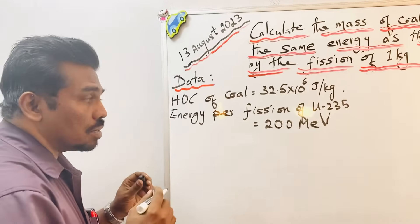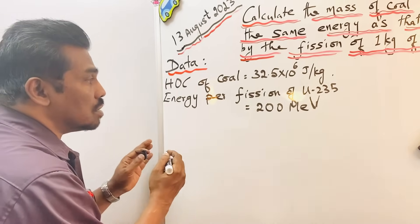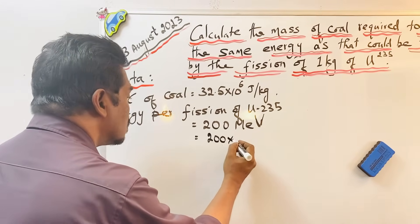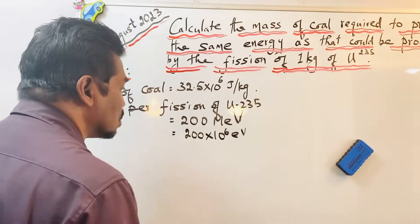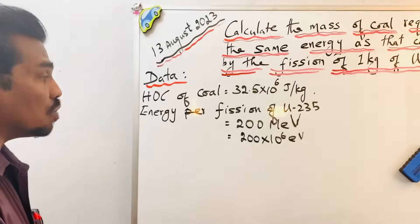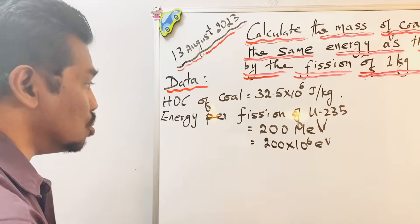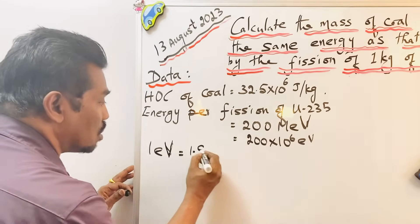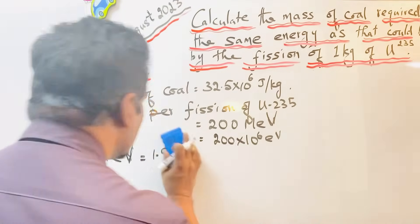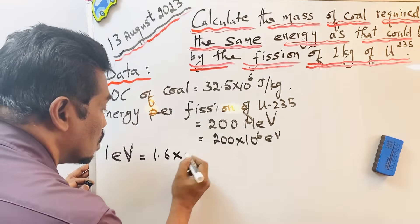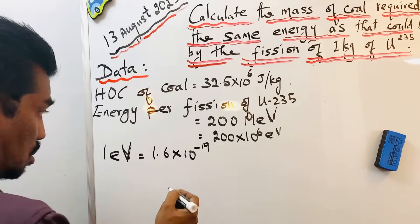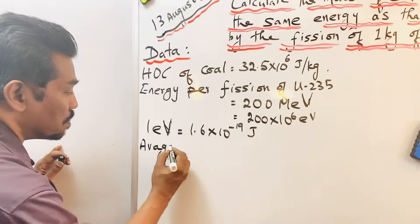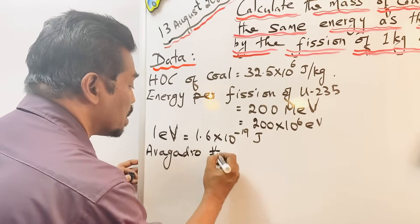The next value is the energy per fission of uranium-235, which is 200 mega electron volts. Mega electron volt is not our MKS unit, so it must be converted. Mega means million, so this is 200 × 10⁶ electron volts. We also need to know how to convert electron volts into joules: one electron volt equals 1.6 × 10⁻¹⁹ joules.